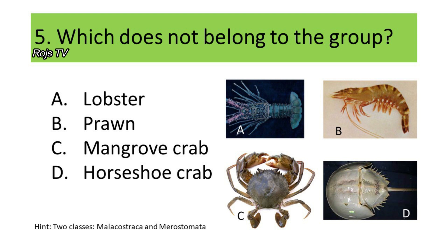These organisms fall either under class Merostomata or class Malacostraca. If your answer is D, horseshoe crab, you are correct. Horseshoe crabs belong to class Merostomata, while the lobster, mangrove crab, and prawn fall under class Malacostraca.